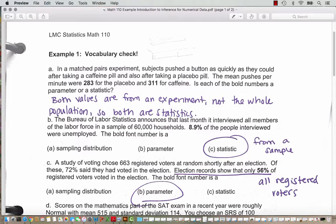In a matched pairs experiment subjects pushed a button as quickly as they could after taking a caffeine pill and also after taking a placebo pill. The mean pushes per minute were 283 for the placebo and 311 for caffeine. Is each of the bold numbers a parameter or statistic? Since both values are from an experiment, not the whole population, both of these values are statistics.